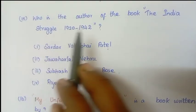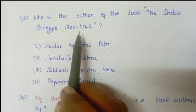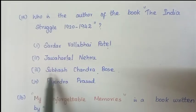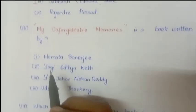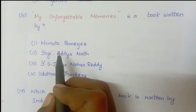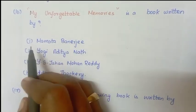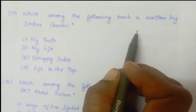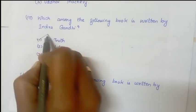Next question: Who is the author of the book The Indian Struggle 1920–1942? Answer is Subhash Chandra Bose. Next question: My Unforgettable Memories is a book written by whom? Answer is Mamata Banerjee. Next question: Which among the following books is written by Indira Gandhi? Answer is My Truth.